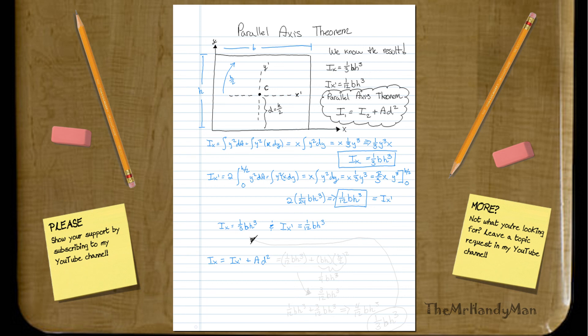What you'll have is you'll have one third, well, let's just plug it in here. You'll have one twelfth base times height cubed. That's your x prime plus your area, which is going to be base times height, times the distance squared, so it's h over two squared.